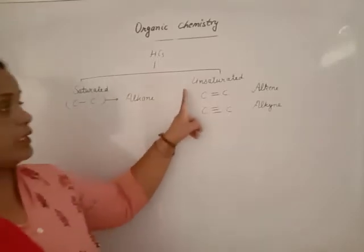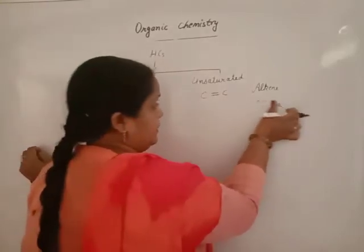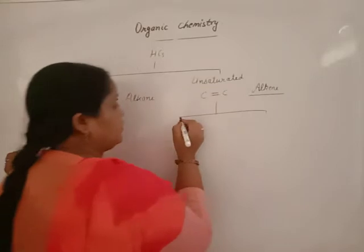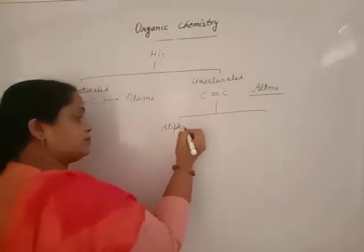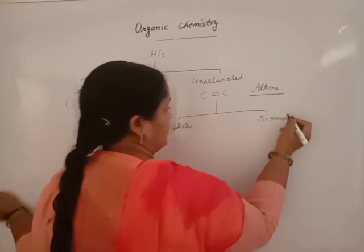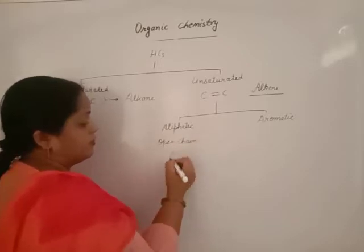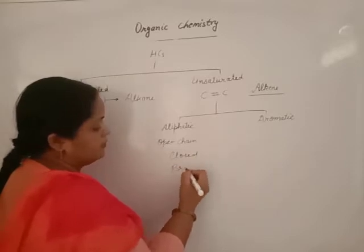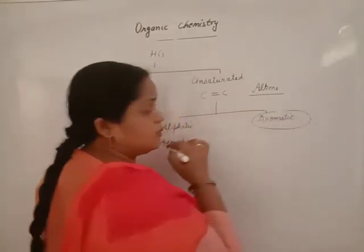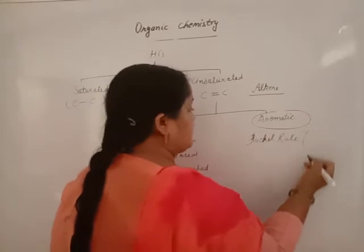We consider carbon-carbon single bond, carbon-carbon double bond, and carbon-carbon triple bond. Carbon-carbon double bond gives alkene, which is further classified into aliphatic and aromatic. Aliphatic alkenes include all open chain, closed chain, and branch chain alkenes.